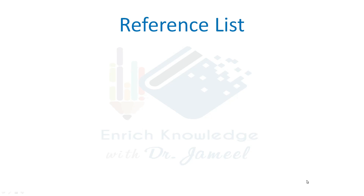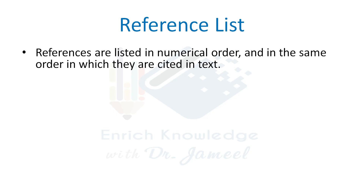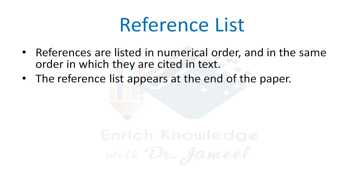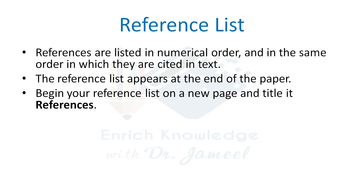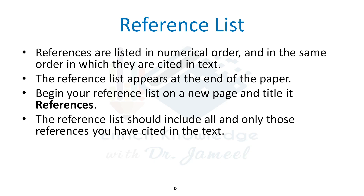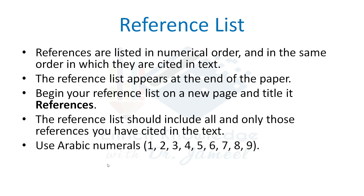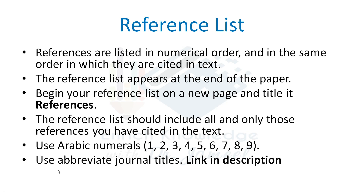The reference list at the end is written with references listed in numerical order, in the same order in which they are cited in the text. The reference list appears at the end of the paper. Begin your reference list on a new page and title it 'References.' The reference list should include all and only those references cited in the text. Use Arabic numerals 1, 2, 3, 4, 5 and so on. In Vancouver style, we use the abbreviated journal title. A link is provided in the description for how to write the abbreviated form of a journal title.